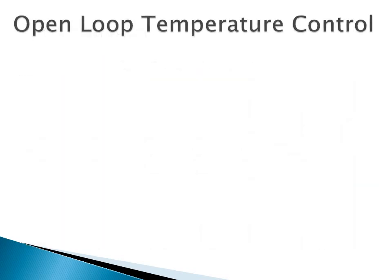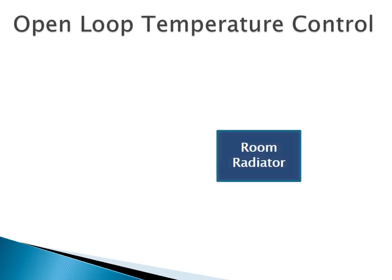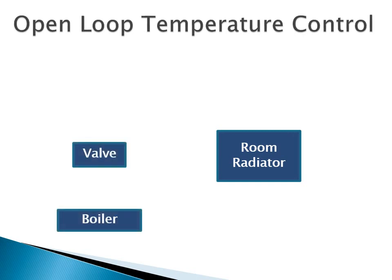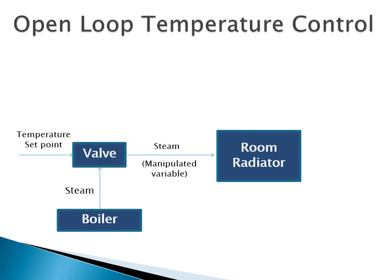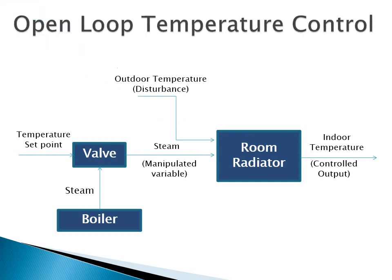We will now discuss the open loop implementation for controlling the temperature in a room. For this purpose we generally have a device known as a room radiator, along with a valve which controls the amount of steam flowing into the radiator. We also have a boiler which supplies all the steam required. Based on the input given by the user, a particular temperature is set for the room, which controls the amount of steam flowing into the radiator to achieve the desired temperature. Apart from this, there can be various disturbances arising because of the outside temperature or the surrounding environment.